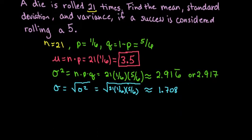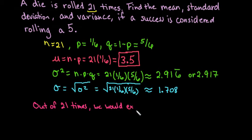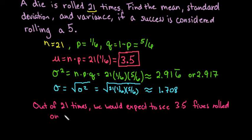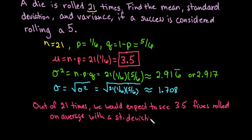So if a die is rolled 21 times, we would expect to see 3.5 fives rolled on average, with a standard deviation of 1.708.